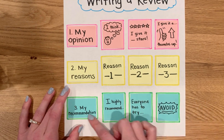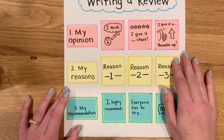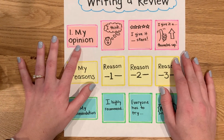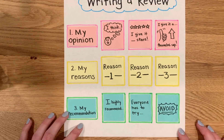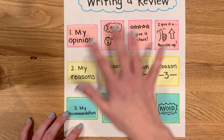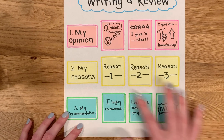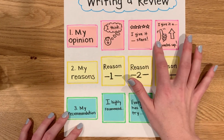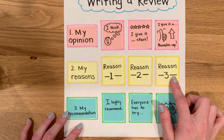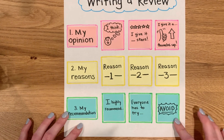These are all just different ways that we could end our writing. So when we're writing a review, we have our opinion, we have our reasons, and we have our recommendation. These are the things I want you to think about as you start to write your review. You can plan on an organizer or on a piece of notebook paper and start to think about what your opinion is, what your three reasons are, and what your recommendation is to the person reading your review.